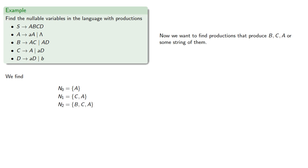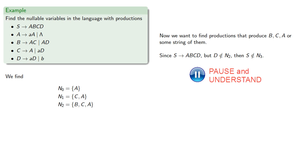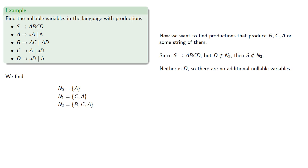Now we want to find productions that produce B, C, A, or some string of them. Since S produces A, B, C, D — but D is not in N2 — S is not going to be in N3. Neither is D, so there are no additional nullable variables. N3 is {B, C, A}, and since N3 equals N2, we can stop. So A, B, and C are nullable, while S and D are not.